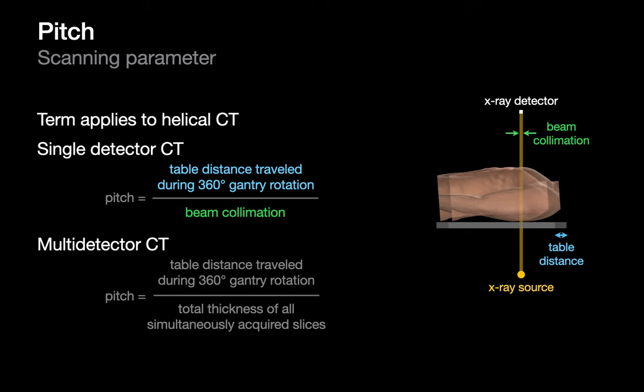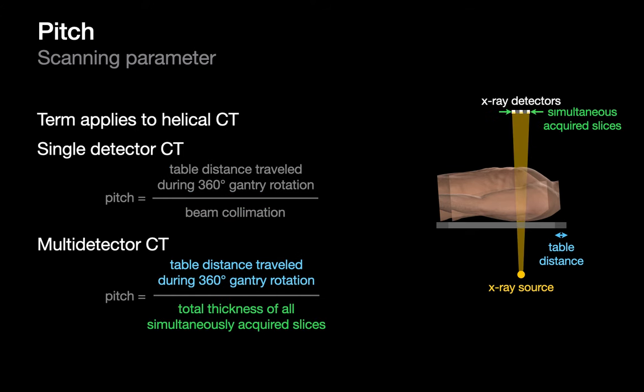Pitch is a term used with helical acquisition CTs that describes how tight that spiral is. For a single-detector CT, pitch is the distance the table travels during one gantry rotation divided by the thickness of the x-ray beam. For multi-detector CTs, pitch is defined as the distance the table travels during one gantry rotation divided by the total thickness of all slices acquired simultaneously by one rotation.